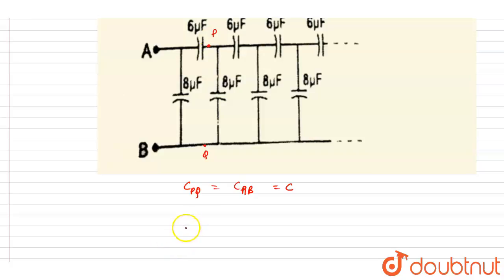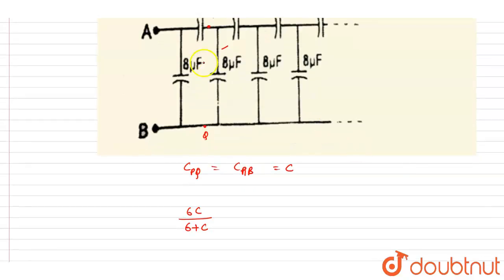Right, so if you see here, 6 times C divided by 6 plus C is the equivalent capacitance of these two capacitors. Now they are connected with 8 microfarad in parallel. Now as we already have discussed, it will be equals to CAB.